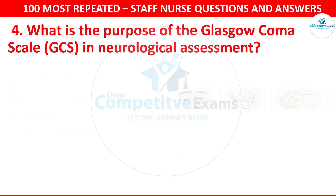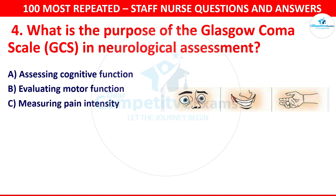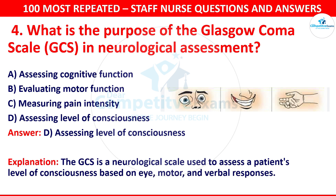Question 4. What is the purpose of the Glasgow Coma Scale in neurological assessment? Your options are assessing cognitive function, evaluating motor function, measuring pain intensity or assessing level of consciousness. The correct answer is assessing level of consciousness. The GCS, known as the Glasgow Coma Scale, is a neurological scale used to assess a patient's level of consciousness based on eye, motor and verbal responses.